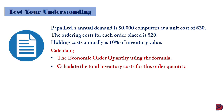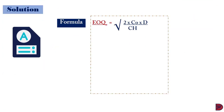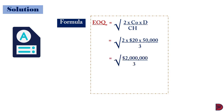Moving straight into the solution, we state the formula: square root of (2 × ordering cost per order × annual demand) divided by the holding cost per unit. The 2 is fixed. The ordering cost was $20 as per the question. Annual demand was 50,000. We divide by the holding cost, which is 10% of the $30 inventory cost, giving $3. The numerator will be $2,000,000 divided by the denominator of 3, giving the square root of 666,667, which leads to an economic order quantity of 816 units. So anytime the business places an order, it must be for 816 computers.